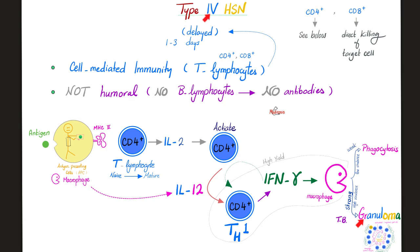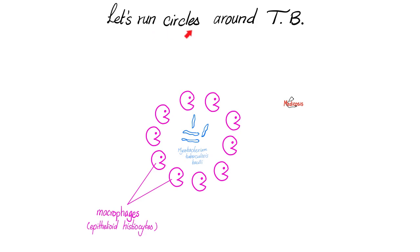Type 4 summary: cell-mediated immunity, T lymphocytes, CD4 cells especially TH1, secrete interferon gamma to activate macrophages. Low virulence organism — phagocytosis. High virulence organism — granuloma, such as tuberculosis, histoplasmosis, blastomycosis, coccidioidomycosis. Or sarcoidosis, where the granuloma is not against a foreign invader.